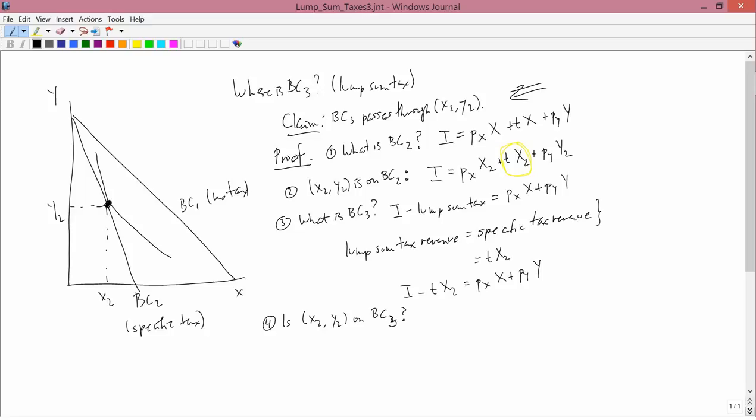We know what BC3 is from step three. BC3 is just this. So if we plug X2, Y2 into that, do we get something that's true or false? If it's true, then X2, Y2 does satisfy BC3's algebraic equation, so X2, Y2 is on BC3. And if it's false, it's not. So let's check. The left-hand side is I minus T times X2. The right-hand side is PX times X2 plus PY times Y2. But I'm not going to have an equal sign. I'm going to have an equal sign with a question mark on it, because I don't know if that's true or not. And that's the question, whether or not it's true.